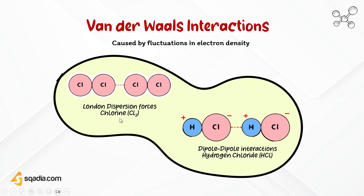London dispersion forces are intermolecular forces that occur between two atoms or non-polar molecules due to the motion of electrons. At any time, electrons can cluster around one part of an atom, making it negatively charged at one end and positively charged at the other, resulting in an instantaneous dipole. This weak, temporary dipole then influences neighboring atoms through electrostatic attraction and repulsion. The strength of dispersion forces increases as the number of atoms or chain length increases. Examples include helium, chlorine, and carbon tetrachloride.